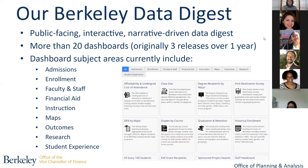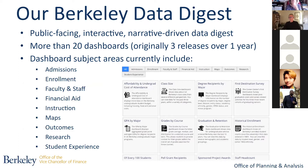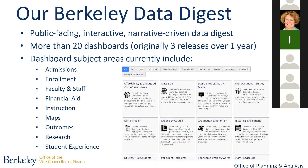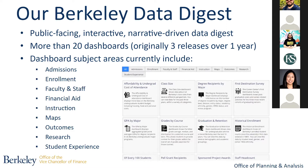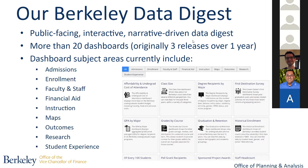Another area we've developed is called Our Berkeley — a public-facing set of dashboards that anyone with internet access can access. You can select broad categories such as admissions or enrollment, and dashboards with Tableau visualizations will appear, relevant to that topic. You'll see Berkeley data visualized with a narrative along the top that walks you through the story of that data. This is a relatively new set of data and visualization, and we encourage everyone on campus to make use of it at opa.berkeley.edu.